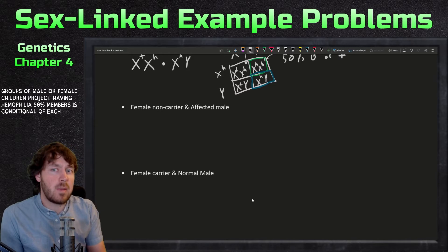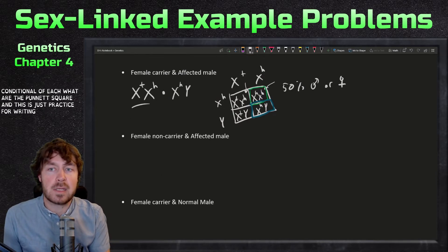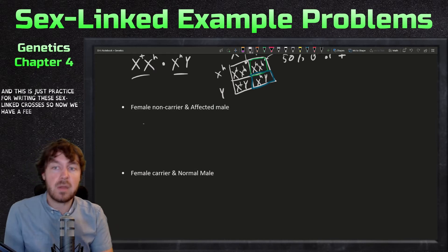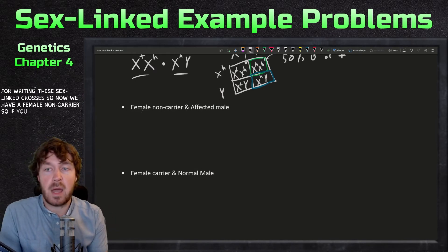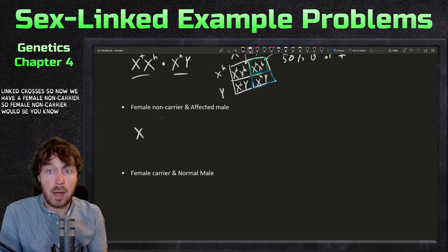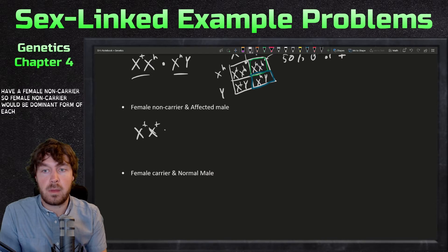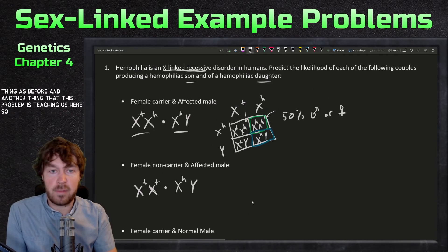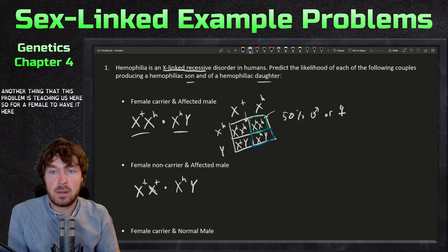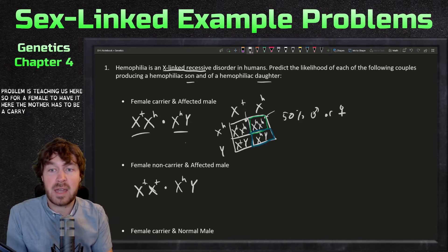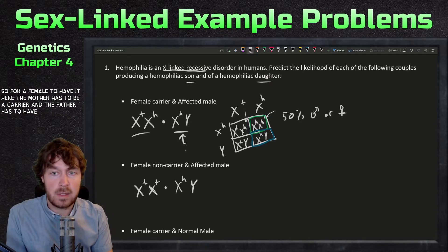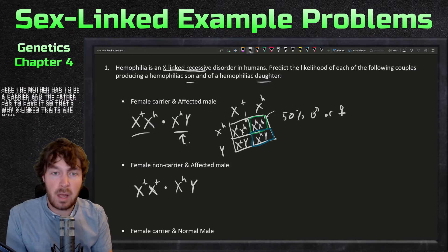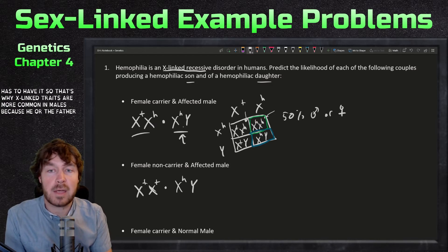Next question: not too bad, just have to set up the Punnett square. This is practice for writing these sex-linked crosses. Now we have a female non-carrier, so a female non-carrier would be the dominant form of each, and an affected male, same thing as before. Another thing this problem is teaching us here: for a female to have it, the mother has to be a carrier and the father has to have it.